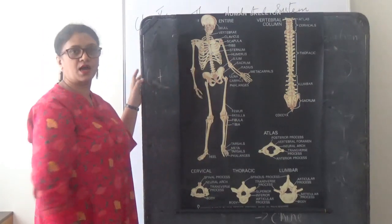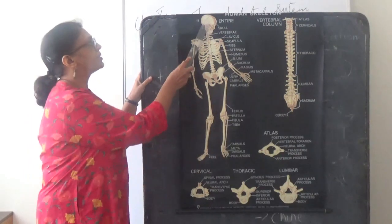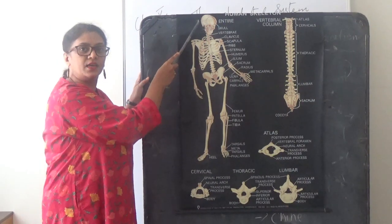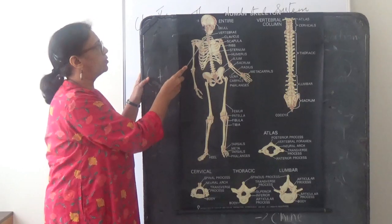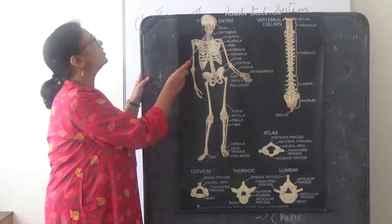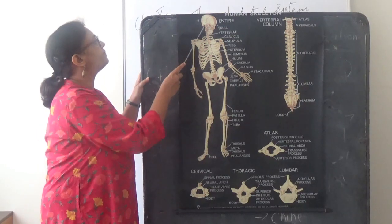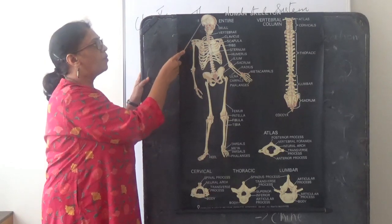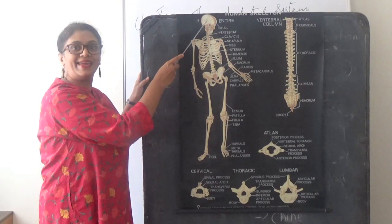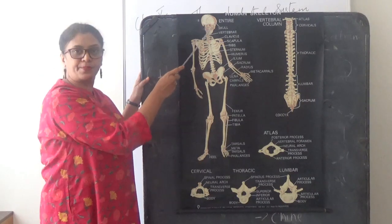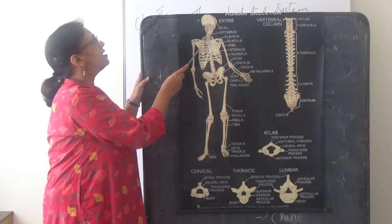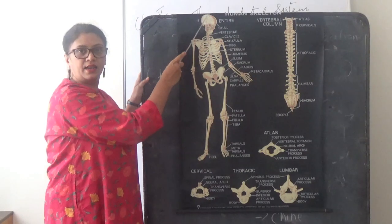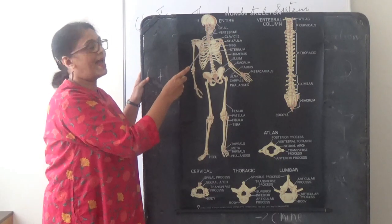Let us first take the skull. The skull is a bony framework of our head. It is made up of eight cranial bones and fourteen facial bones. There is space for the eyes, the nose, and the mouth — eight plus fourteen makes twenty-two bones. The eight cranial bones are interlocked to form a frame that protects our brain. The lower jaw is the only movable bone in the skull; it enables you to talk and to eat.